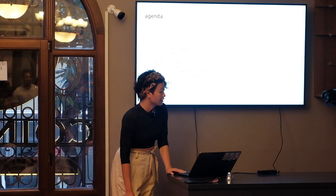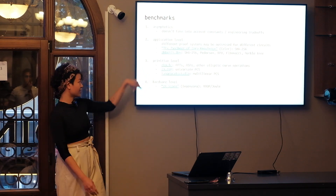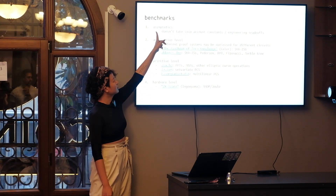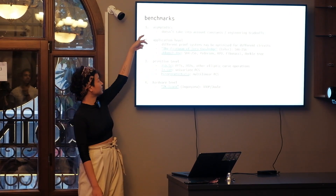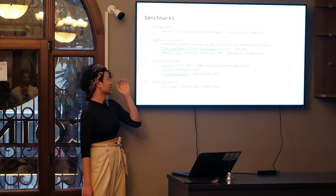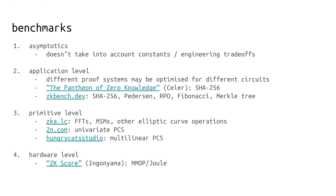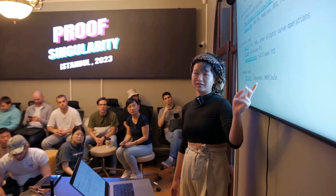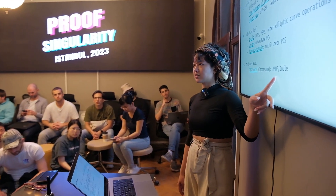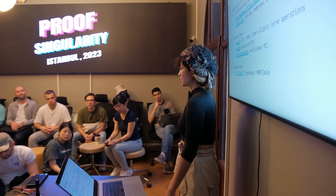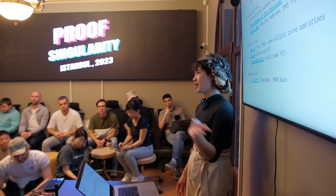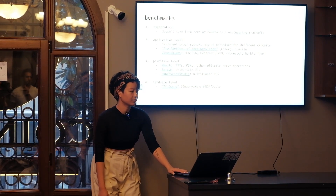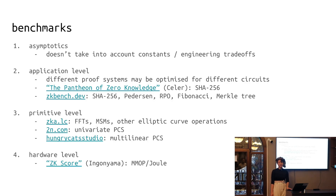On benchmarks: there are benchmarks at many different levels. One worth mentioning is the ZK score proposed by Ingonyama — measured in MOPs per joule, modular multiplications per joule. They took inspiration from how AI companies have been benchmarking their operations. We definitely need better benchmarks.